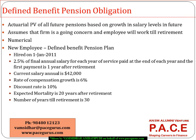In a defined benefit pension plan, we look at the actuarial present value of all future benefits, based on projected salary growth. The term 'actuarial present value' is used because mortality must be considered — some employees working today may not be alive until retirement, or may have contributed for only a few years before passing away. Actuarial assumptions account for mortality rates to properly measure the pension obligation.